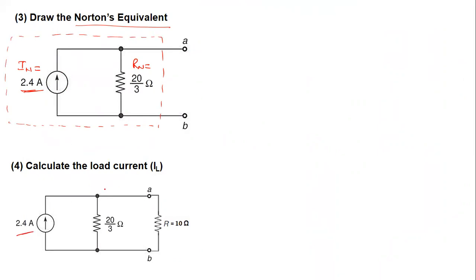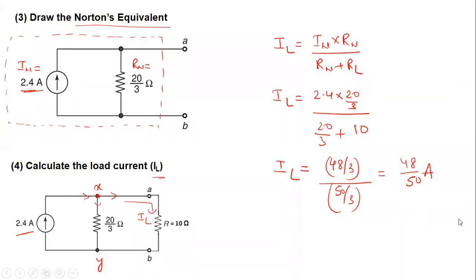And the last step is we will calculate the load current here. So load current can be calculated by applying the current division rule at this particular point. So this is load current here. So load current is equal to IN as per the formula into RN divided by RN plus RL. So IL is equal to 2.4 into 20 by 3 divided by 20 by 3 plus 10. So IL is equal to, so IL in this case is 48 by 50 ampere.